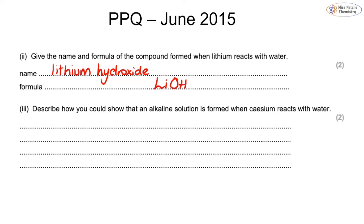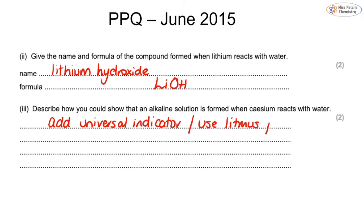For part three, describe how you could show that an alkaline solution is formed when cesium reacts with water. You need to explain how to check the pH — add universal indicator or use litmus paper, and it will turn blue. If it turns blue, that tells us an alkali has been formed.